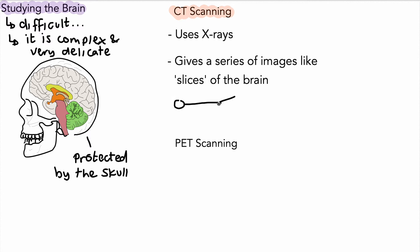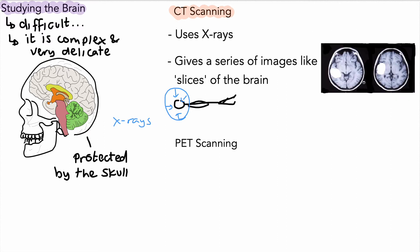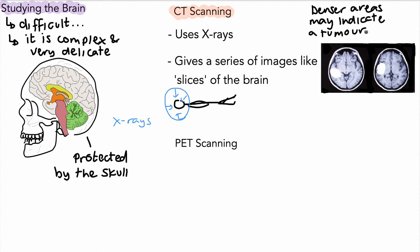A person would be lying down and they would have a circular device which fires x-rays at the head, giving images in slices. Here are a couple of images taken using CT scanning. On these scans you can see there are some whiter areas — these are denser areas than other parts of the brain, which may indicate an issue such as the presence of a tumour. So this is one use of CT scanning.